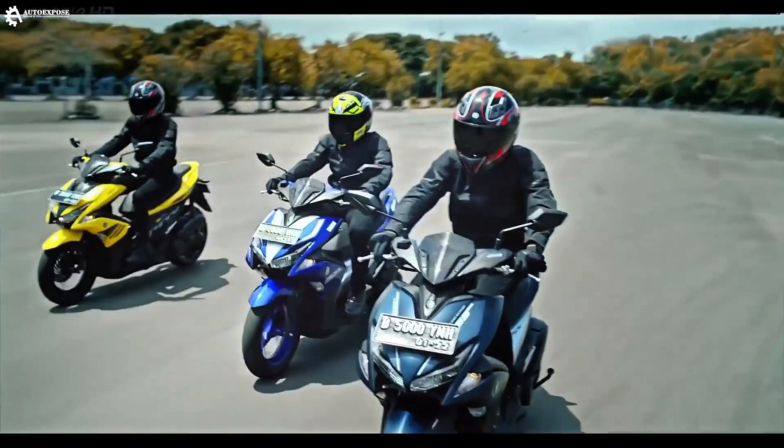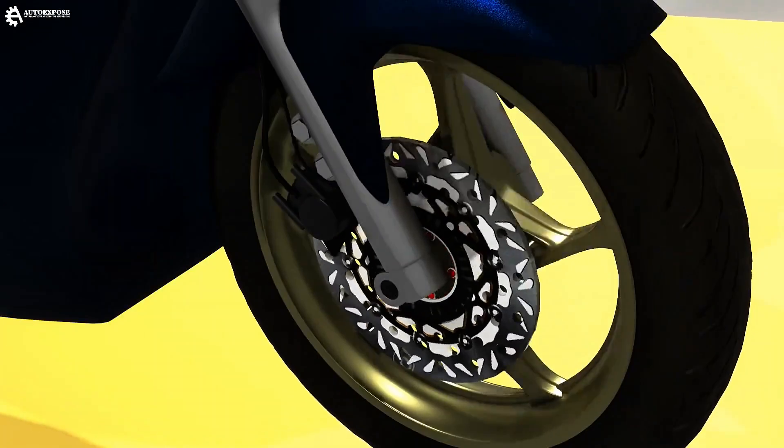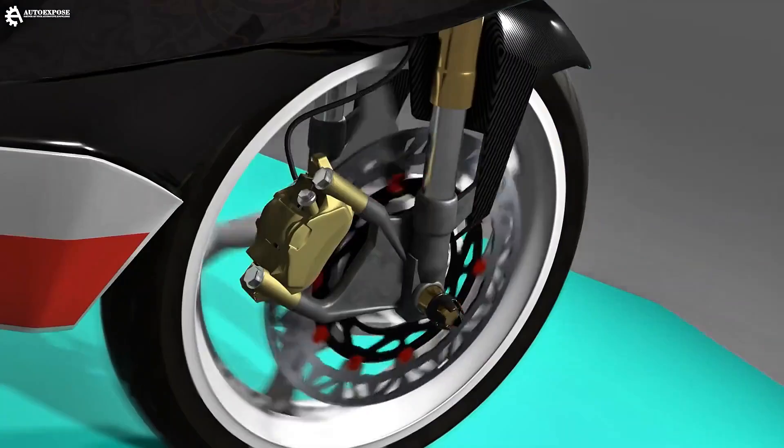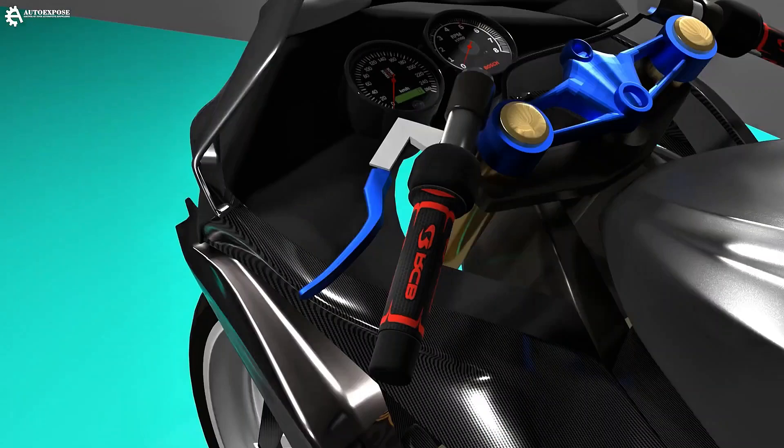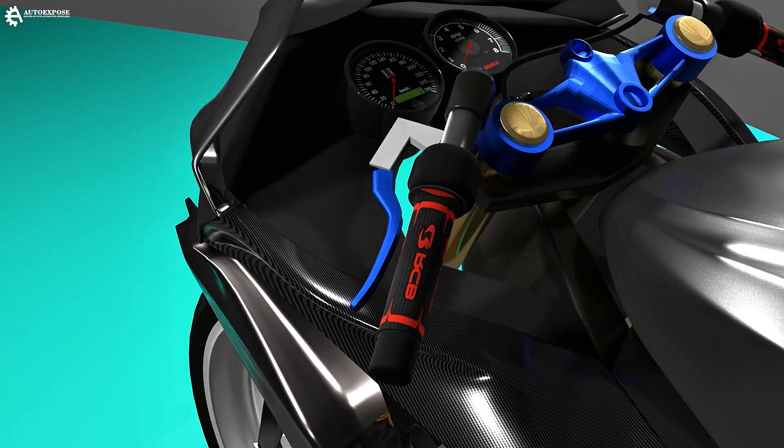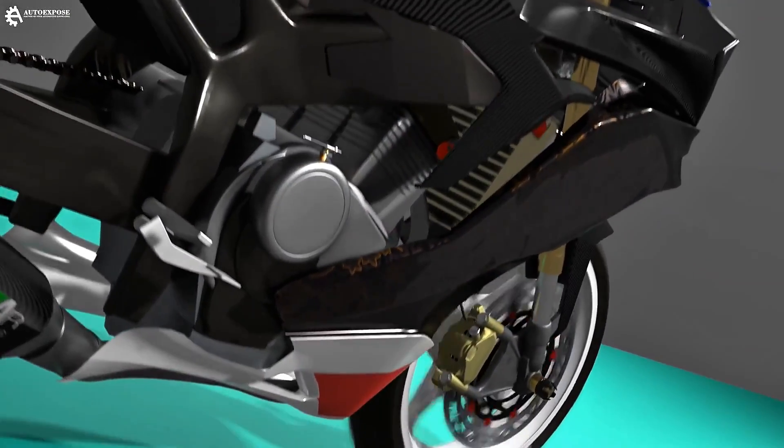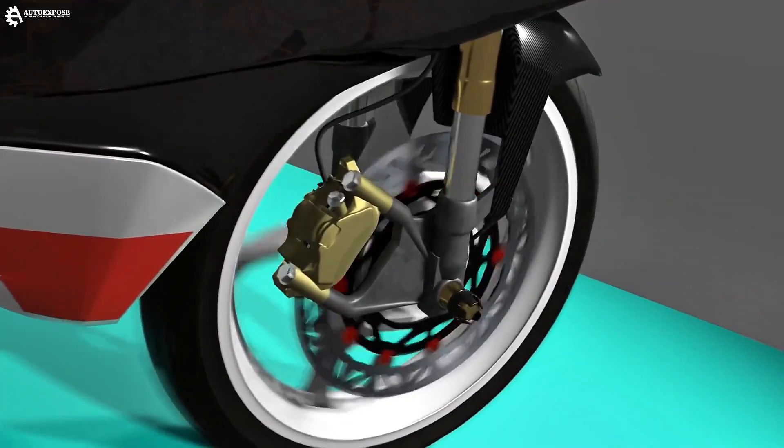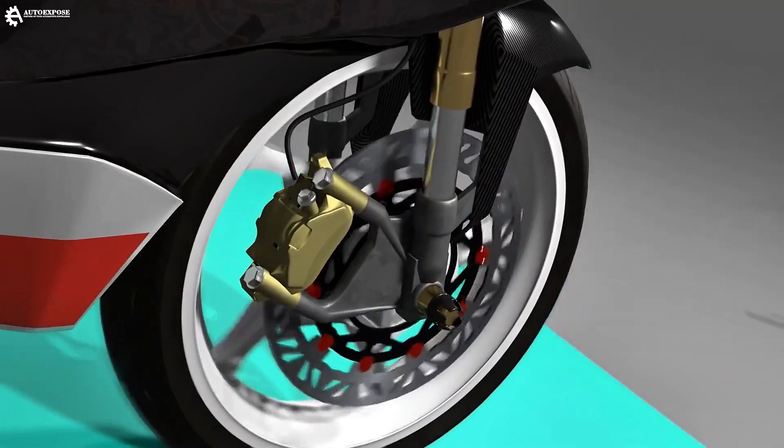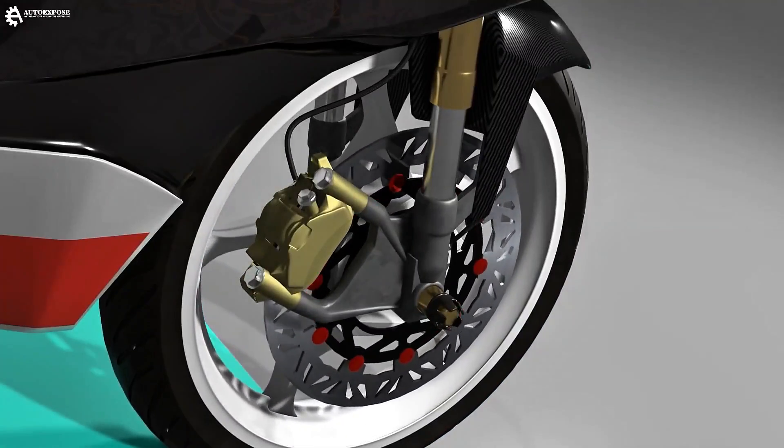Engine braking is quite important, because it can lighten the load on the braking system. Compared to not engaging the engine brake, for example, when going downhill, if you pull in the clutch, the motorcycle will slide without any support.